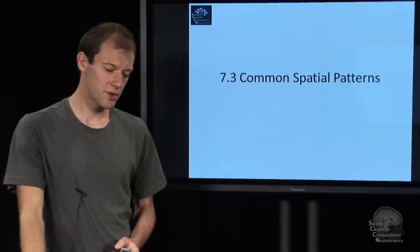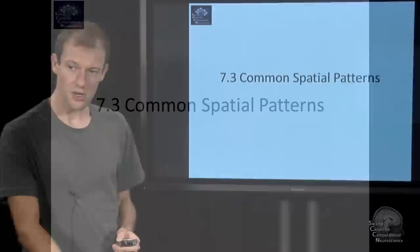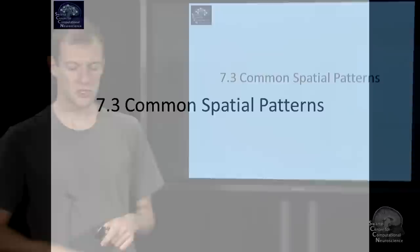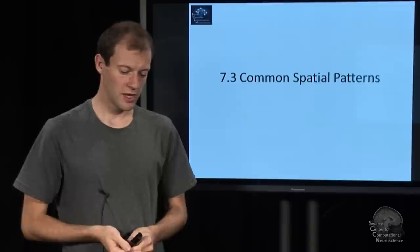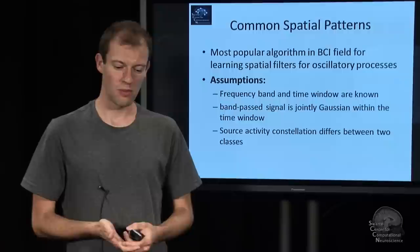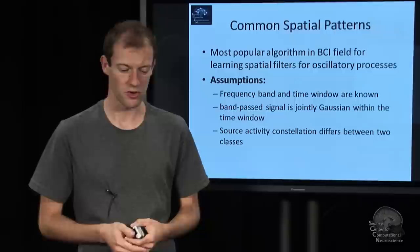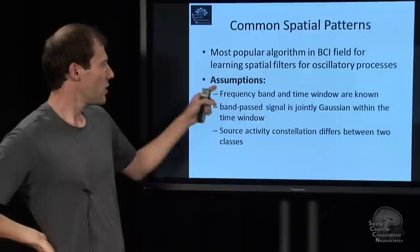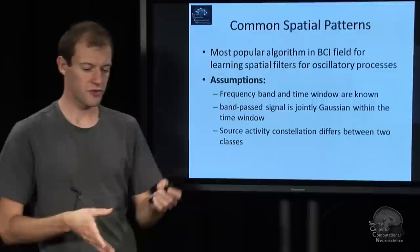The third module in this lecture discusses a particular algorithm, which is a particular solution to the spatial filter problem, assuming Gaussianity of the signal. It's basically the most popular algorithm in the whole BCI field, specifically for oscillatory processes. So you can't really use this for ERPs. What it assumes, that's really important, is that you know the frequency band.